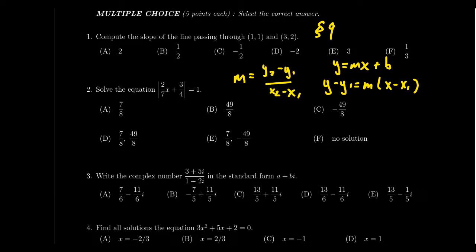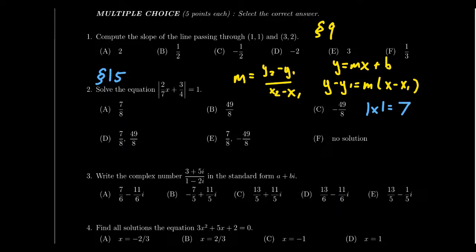Question number 2 is more specific. You will be given an absolute value equation to solve, covered in Lecture 15. The key observation: if an absolute value equals a positive number like 7, you get two solutions — x equals positive 7 and negative 7 — because absolute value forgets the sign. You have to consider both the positive and negative cases. If the absolute value equals 0, you get a unique solution, since plus or minus 0 is just 0.